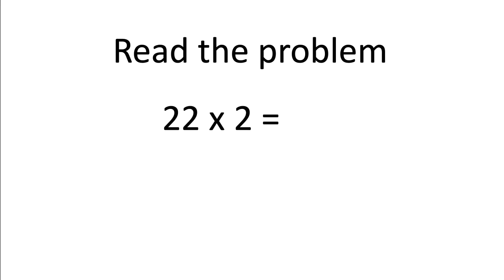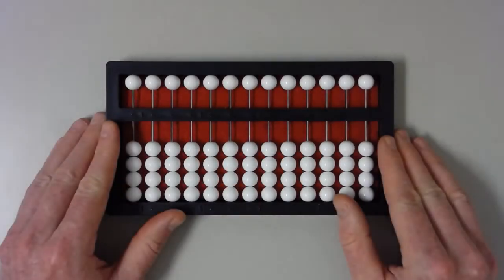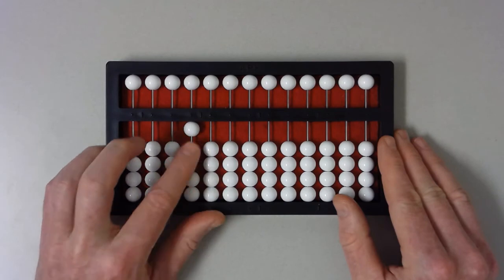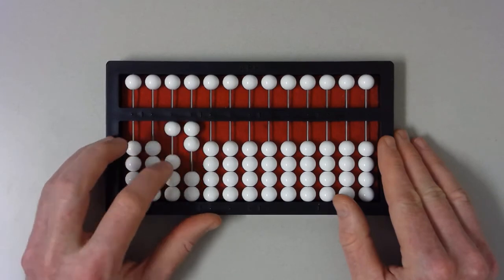What's the multiplicand? The number to be multiplied is twenty-two. Set the problem. Set the multiplicand, twenty-two, in the billions section by setting two in the ones column and twenty in the tens column of the billions section.